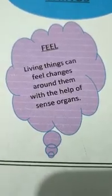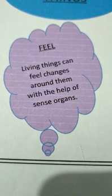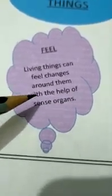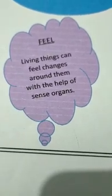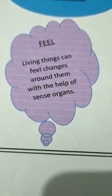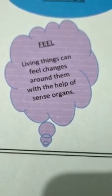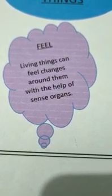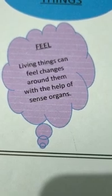The last feature of Living Things is that Living Things feel. Living Things can feel changes around them with the help of sense organs. Human beings have ears to hear, eyes to see, nose to breathe and smell, tongue to taste, and skin to feel touch. Plants too can feel changes around them — for example, the sunflower turns towards light.